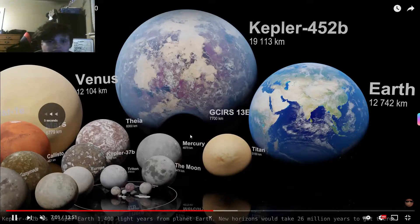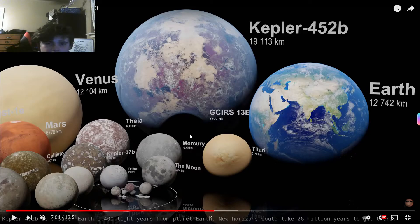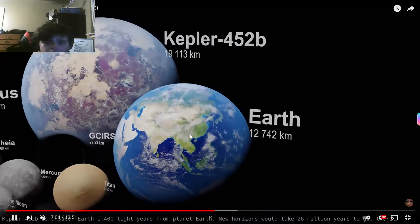Let's say it was a super earth. 1400 light years from planet Earth. New Horizons, it's like 26 million years to get there. Okay, no.